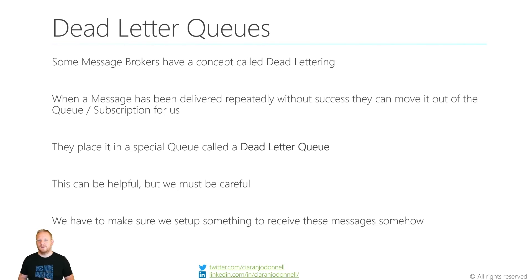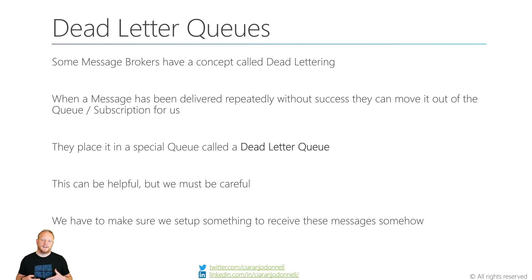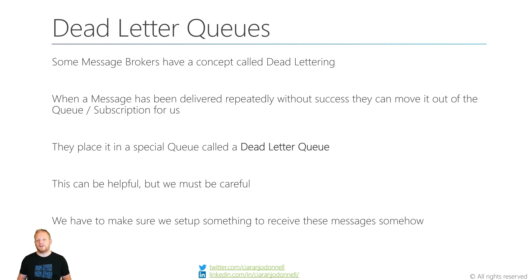Message brokers can actually help us with this. They have a concept called dead lettering. If a message gets delivered to us repeatedly without success - if the message broker knows that it keeps trying to deliver this message and it doesn't get acknowledged whenever it's received - it can actually move it out of the queue or subscription and create a special place called a dead letter queue. This is a special type of queue that only receives messages that have been taken out of regular queues or subscriptions. This can be super helpful if we've failed to handle our errors properly and we are still crashing when we receive poison messages, it can help us recover. But still there's a message that's been sent but can't be processed and we have to decide what to do. We need to set something up to receive messages from the dead letter queue and do some form of alerting to tell people something is going wrong so we can get the system fixed.